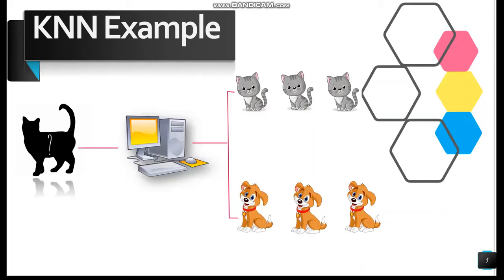To detect the animal, the machine uses certain features. For cats, features such as pointy ears, color of eyes, and sense of smell can be used. Similarly, dogs can be identified based on long ears, color of eyes, and sense of smell. After training, when a new image is given to the machine, the KNN algorithm classifies it as either cat or dog depending on the similarities in their features. For example, if a new image has pointy ears, it will be classified as a cat.